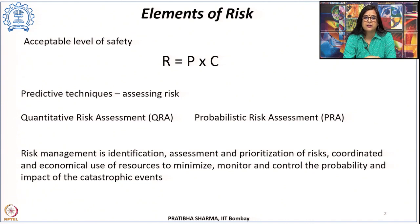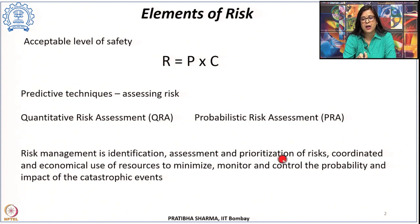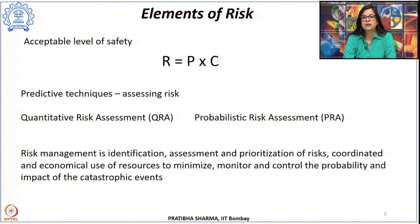When it comes to risk management, it involves the identification, assessment, and prioritizing of risk — determining what the possible risks are and which risks could be most devastating. Thereafter, a coordinated and economical use of resources is required to minimize, monitor, and control both the probability and frequency of occurrence of such accidents, and the impact and consequences of such catastrophic events.